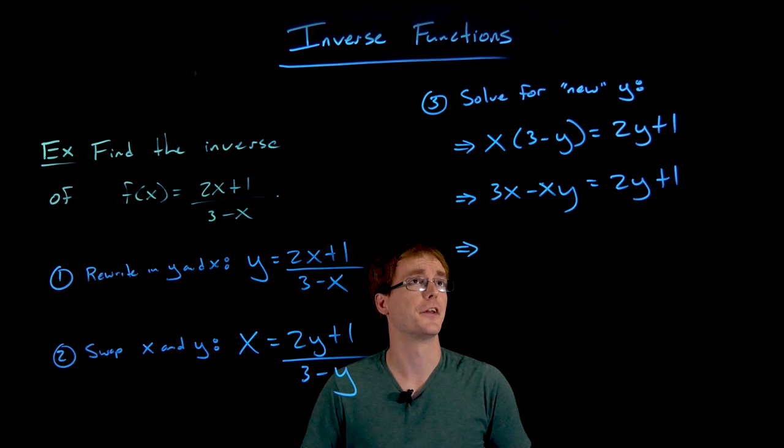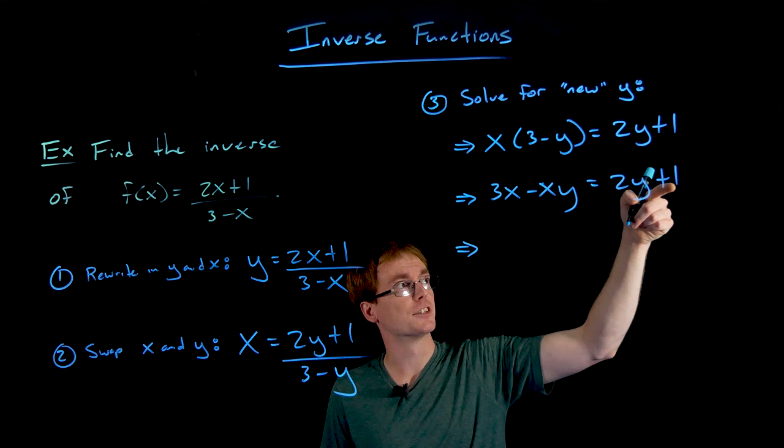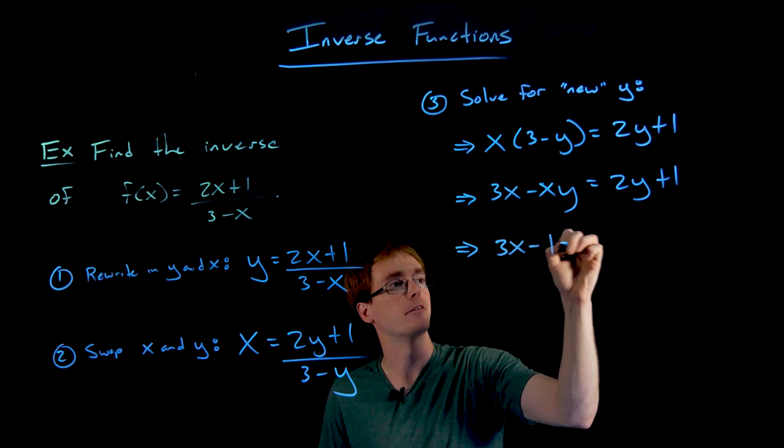All right, so if we want all the y's stuff on one side, we need to get this positive 1 that is on the right-hand side over to the left-hand side. So we'll have to subtract 1 from each side to help us do that.